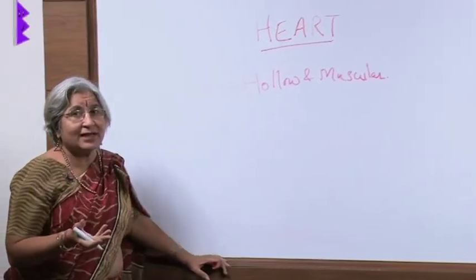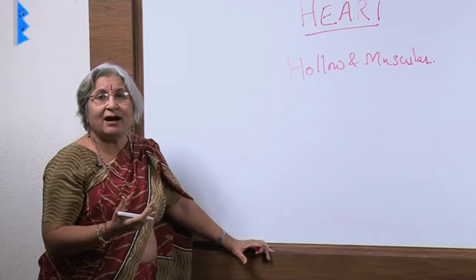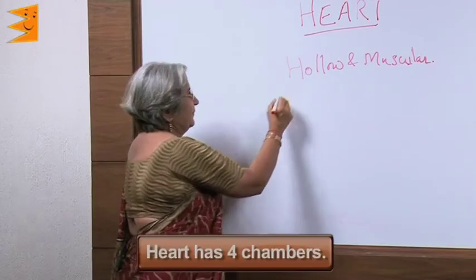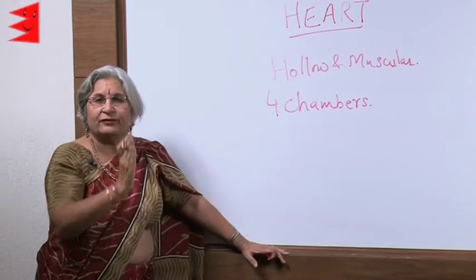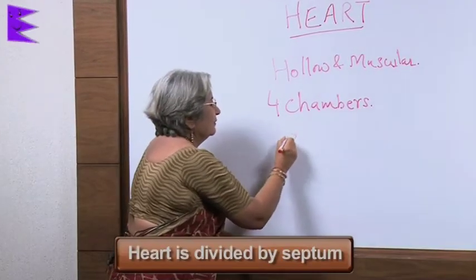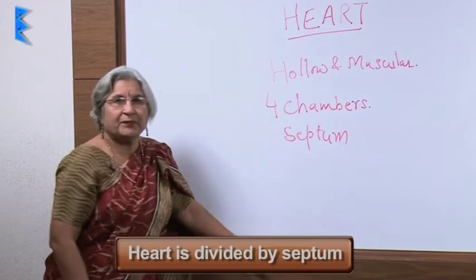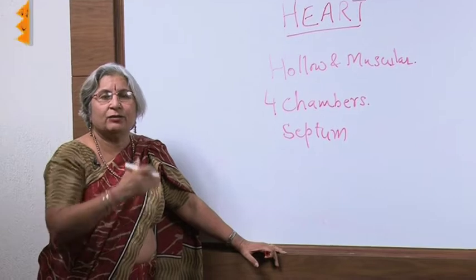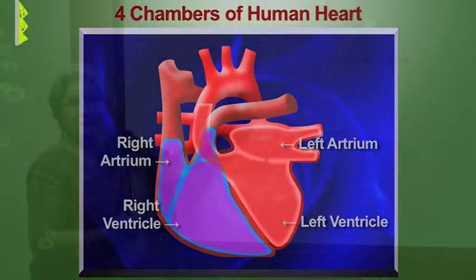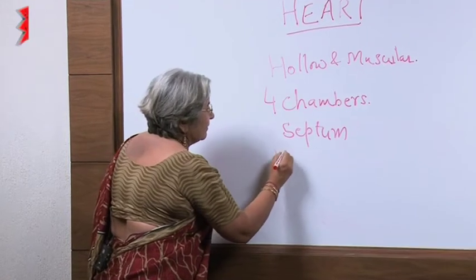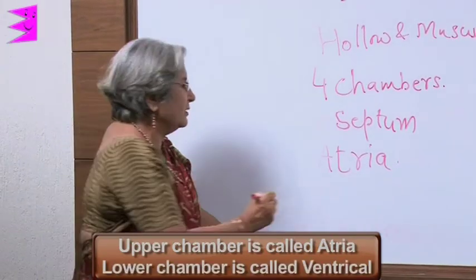When we cut a longitudinal section (LS) we find that the heart has four chambers. There is a kind of divider called a septum which divides the heart into right and left sides. Further, both sides are divided into upper and lower parts, giving us four chambers in total. The upper chambers are called atria (singular: atrium) and the lower ones are called ventricles.